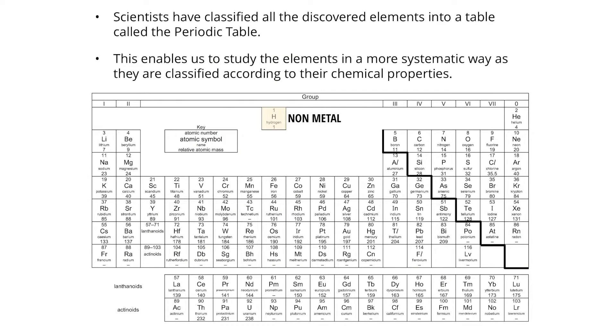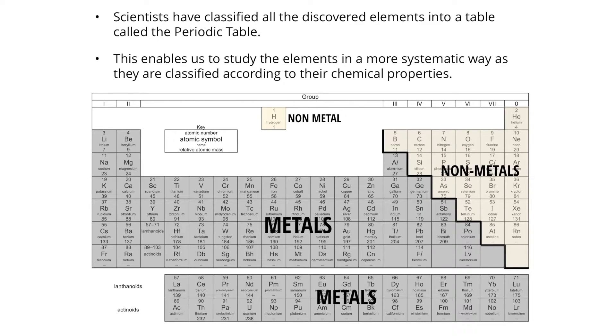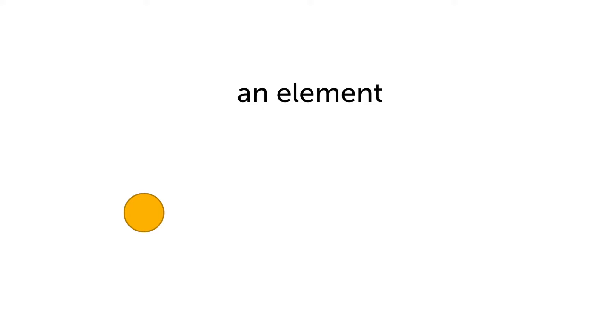There are 118 known types of elements at this point in time and they are found in the periodic table of elements. Each element is made up of a different kind of atom. This is a representation of an element where we use circles to represent atoms. They all represent elements because we only see one type of atom.